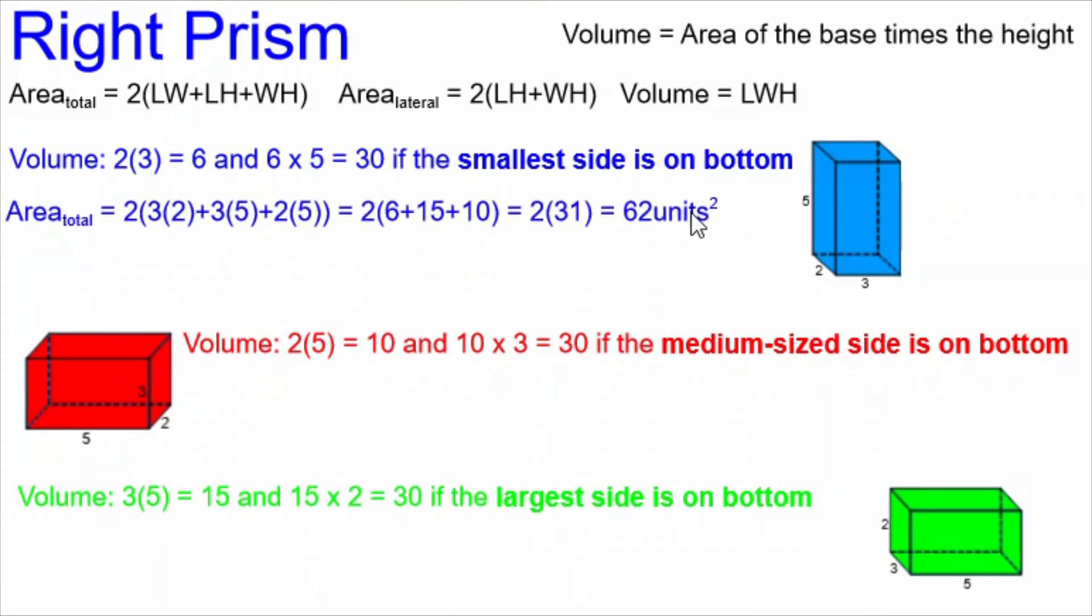Now let's look at the total area. If we have the smallest side on the bottom, and we do our total area formula, we end up with 2 times 31 equals 62 units squared.